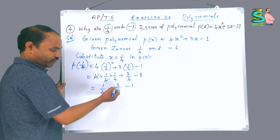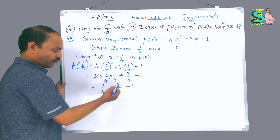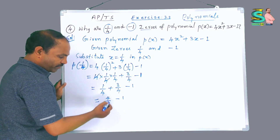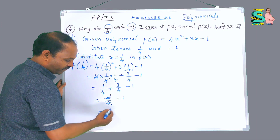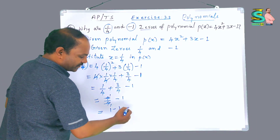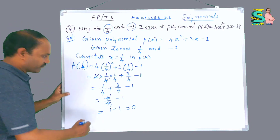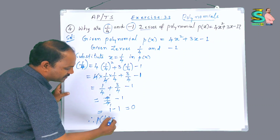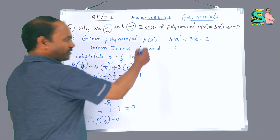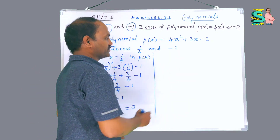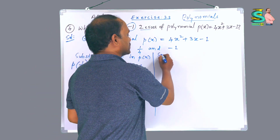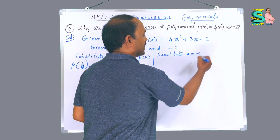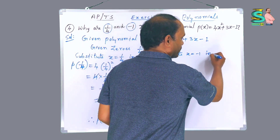Now 1/4 + 3/4 are like fractions, so 1 + 3 = 4, giving 4/4 minus 1. 4/4 equals 1, so we get 1 - 1 = 0. Therefore p(1/4) is equal to 0.